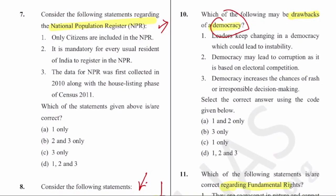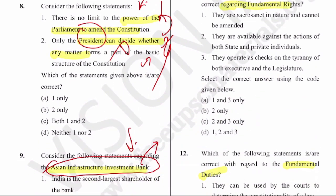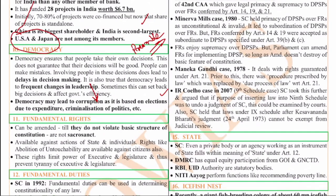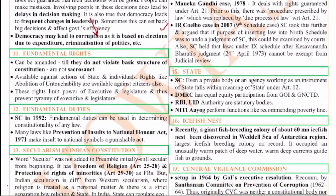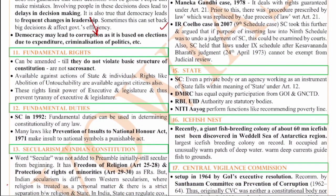The eleventh question is on fundamental rights. Broadly we have six fundamental rights: right to equality, right to freedom, right to life, right to freedom of religion, cultural and educational rights, and right to constitutional remedies. These fundamental rights are sacrosanct and are available to all people. Citizens have a few fundamental rights which foreigners do not have, like Articles 15, 16, 19, 29, and 30.